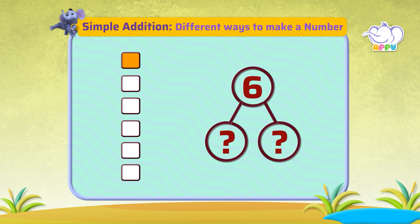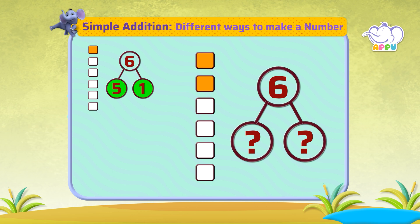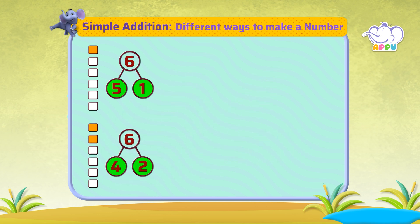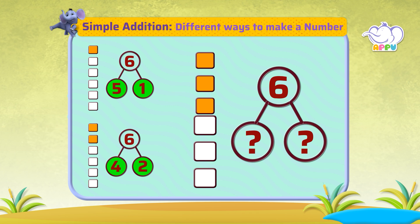Here we have five white squares and one orange square. Six is the same as five and one. Here we have four white squares and two orange squares. Six is the same as four and two. Here we have three white squares...